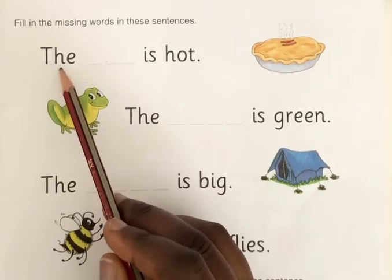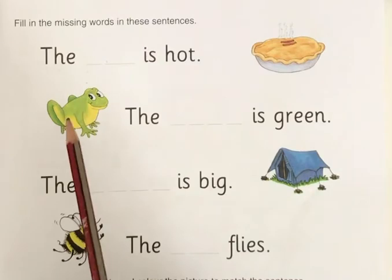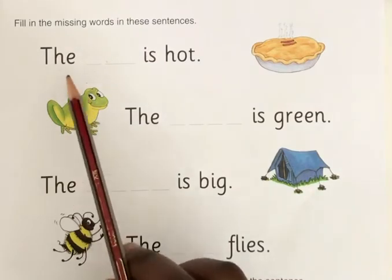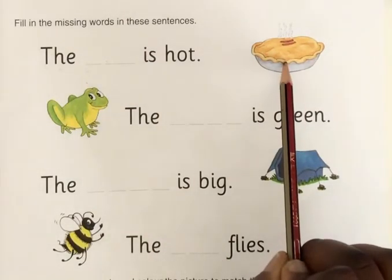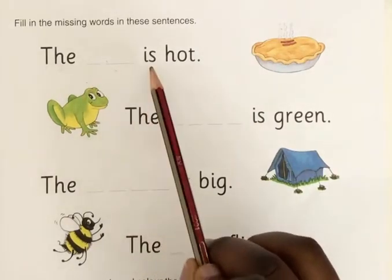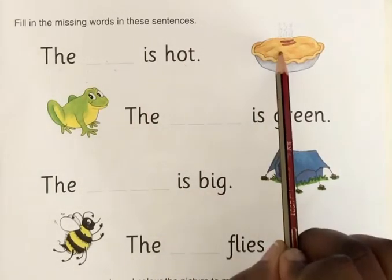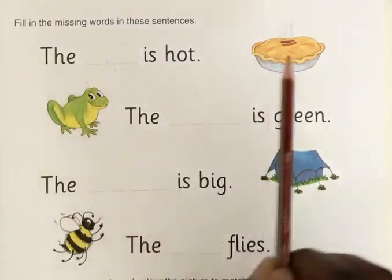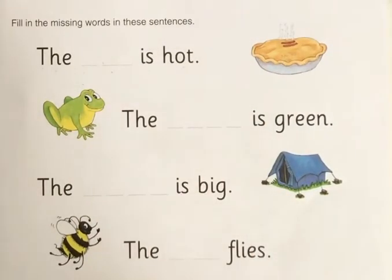Now let's read. "The" is the tricky word — always take note of the tricky word when reading sentences. What is this? The pie is hot. This is the pie. Give me the sounds in pie — pie has only two sounds.